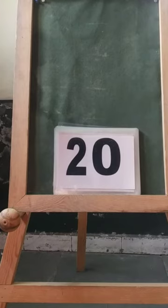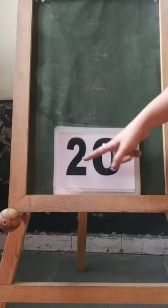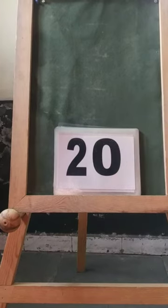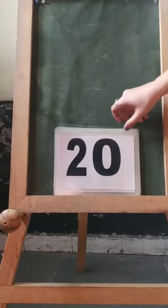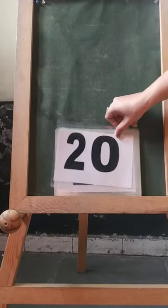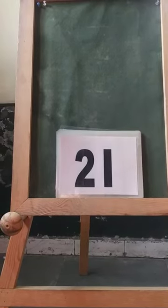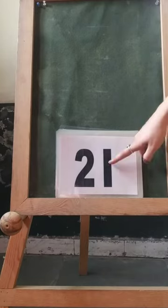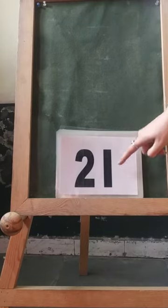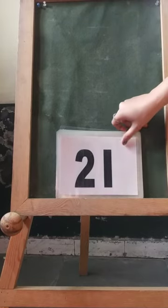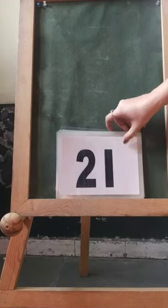Nineteen after which number comes? Yes, twenty. Which number is this? Twenty — two tens, zero ones, this makes number twenty. Twenty after? Twenty-one — two tens, one one, this makes number twenty-one.